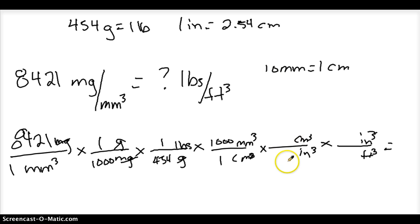All right, so centimeters to inches, we know that there's one inch in 2.54 centimeters. So once again, you take your 2.54 times 2.54 times 2.54, and you're going to get about 16.39 centimeters cubed for every one inch cubed.